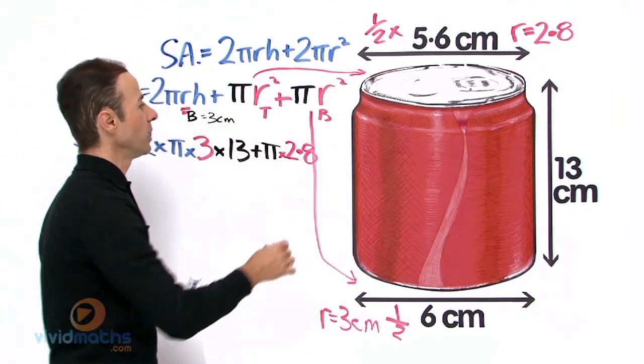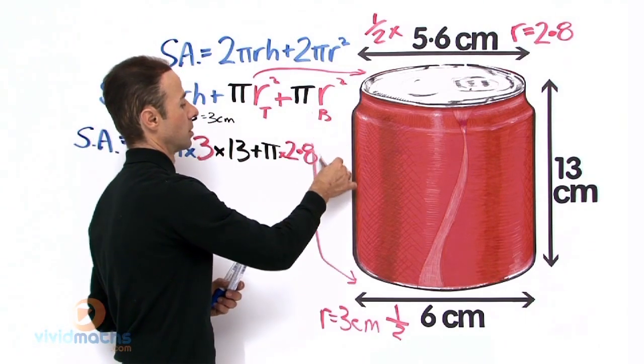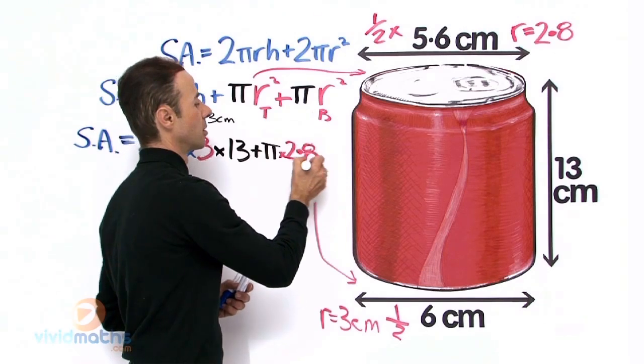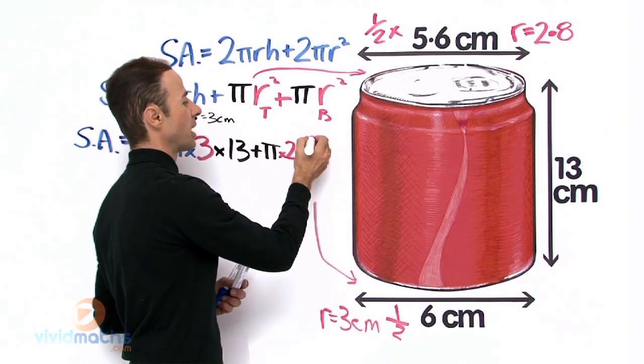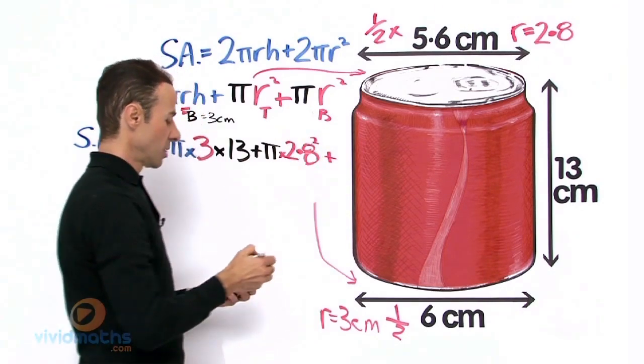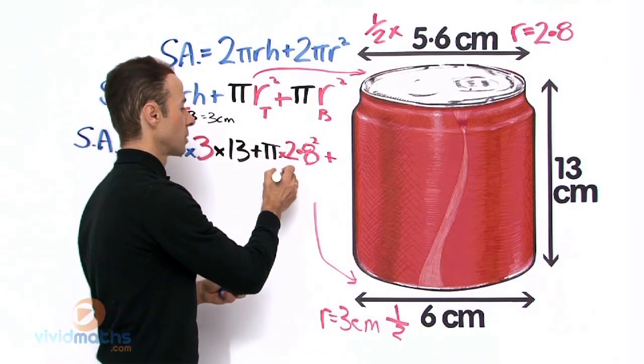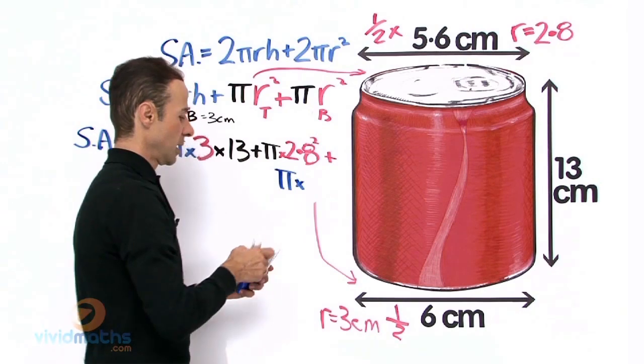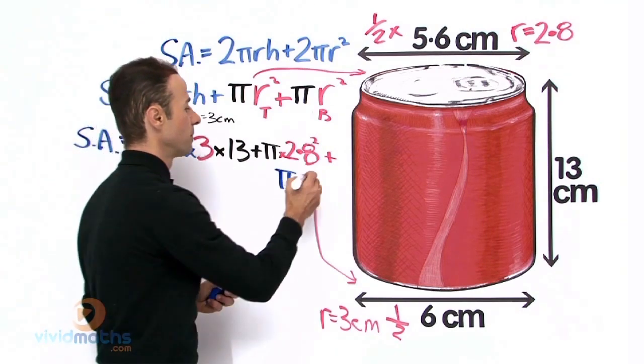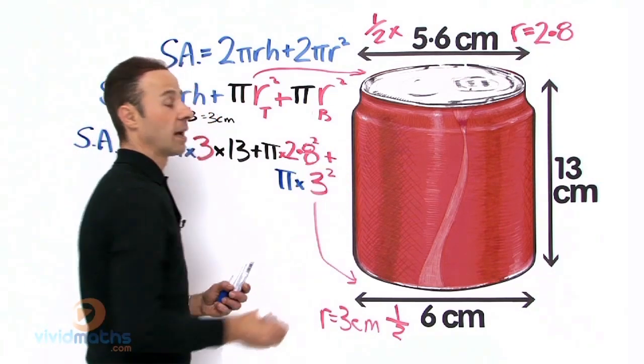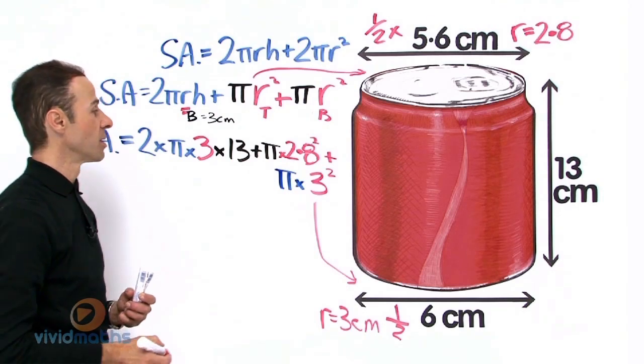And that is going to be 2.8 squared, because it is πr² squared. Plus then we have the bottom one, and the radius for that one is 3, and that is squared for that one.